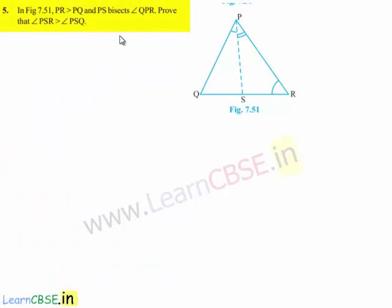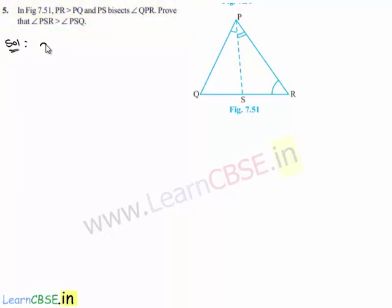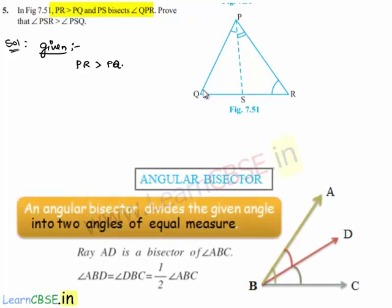Now moving on to the fifth question. In figure 7.51, PR is greater than PQ and PS bisects angle QPR. Moving on to the solution, let us note down the given information: PR is greater than PQ and PS bisects angle QPR, so angle QPS is equal to angle SPR.